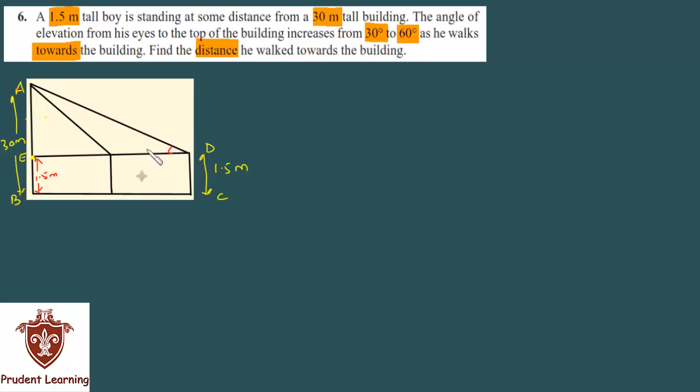And this angle given is 30 degrees where he was standing. Later he traveled some distance, and this distance I assumed y. And at the starting distance I assumed x. So he reached here. After traveling a distance of y towards the building, he reached here. This point is named FG. And this angle is given as 60 degrees.